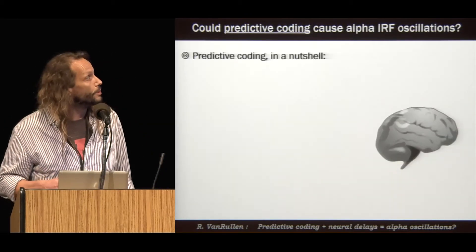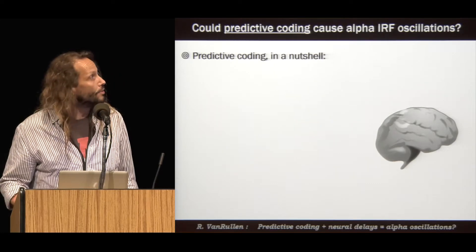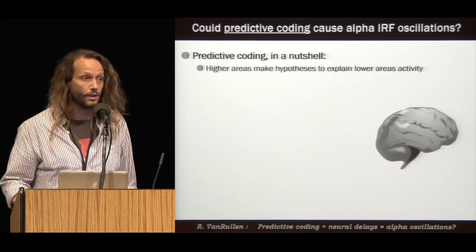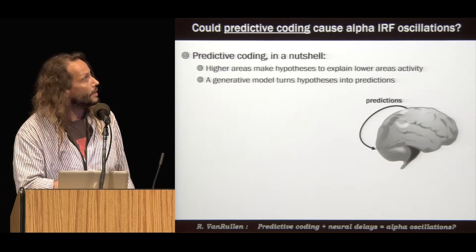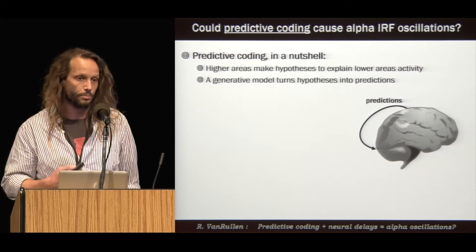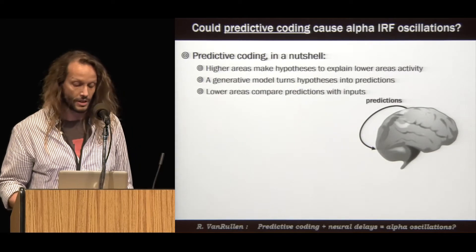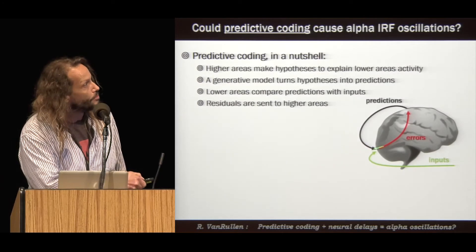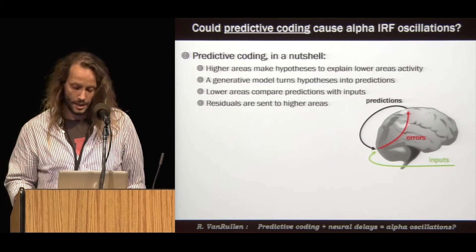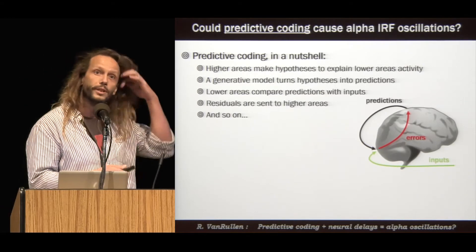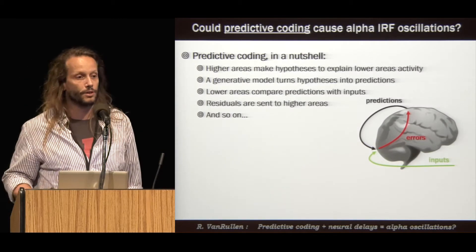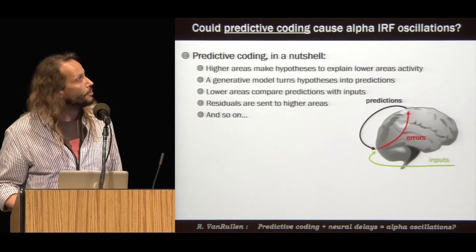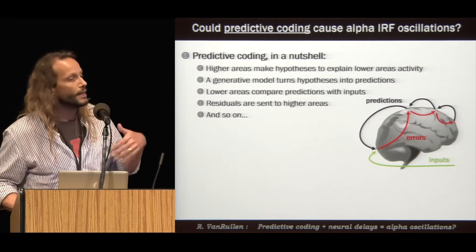Let me briefly remind you about predictive coding. In this framework, higher-level brain regions make hypotheses to explain activity in lower areas, and then using a generative model, they turn these hypotheses into predictions that are sent back to the lower areas. The lower areas compare the predictions with their inputs, and then the residual — the so-called prediction error — is sent back up the chain, and so on and so forth, until the system hopefully converges onto a stable interpretation of the input. Similar loops can be stacked on top of one another as a hierarchical system.